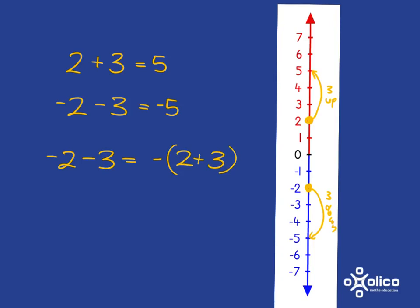And so, if we see negative 2 subtract 3, we know we're at negative 2 going down. It's going to have the same effect as being at 2 going up, but it is in the negatives.